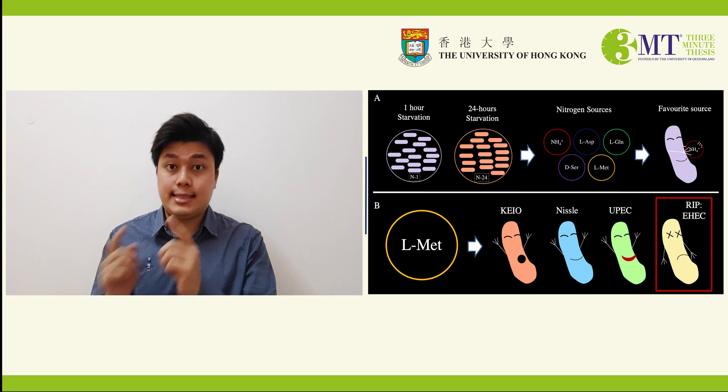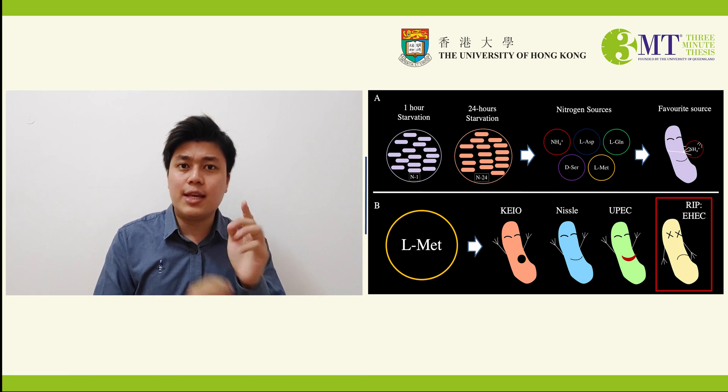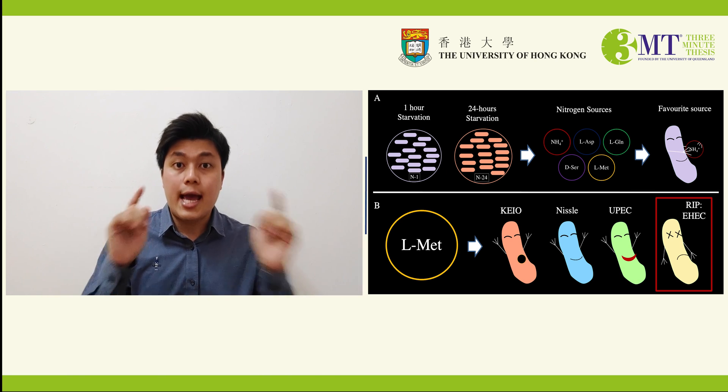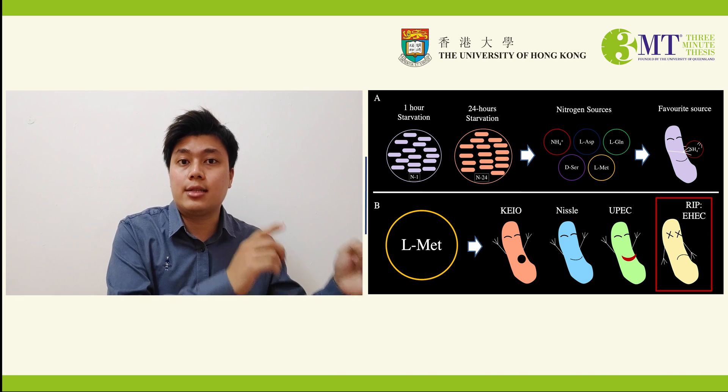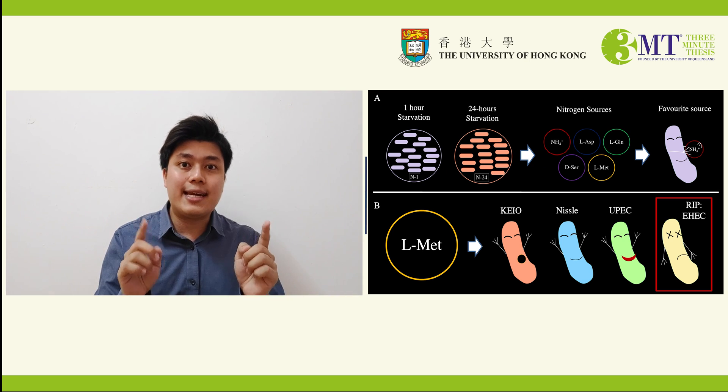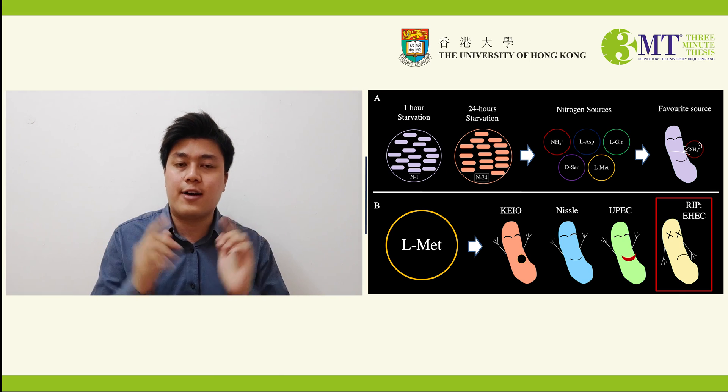Considering that in this E. coli there is nitrogen preference, I want to know if other variants of E. coli, especially those with pathogenic nature, do they too have similar nitrogen preference, or are they able to use all the sources equally well and fast?